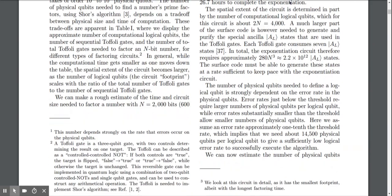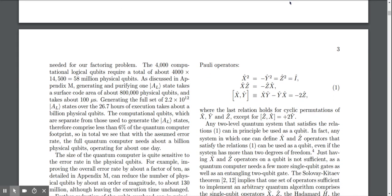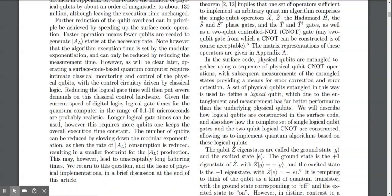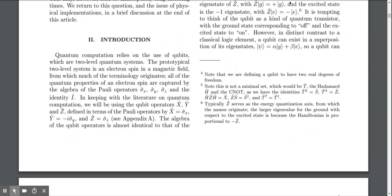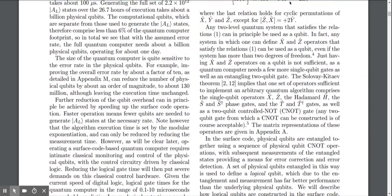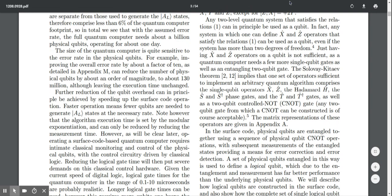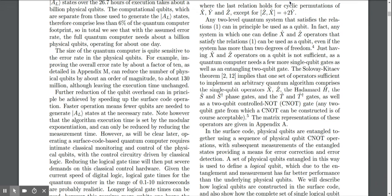Quantum computation relies on the use of qubits, which are two-level quantum systems. The prototypical two-level system is an electron spin. In keeping with the literature on quantum computation, we'll be using the qubit operators X, Y and Z.